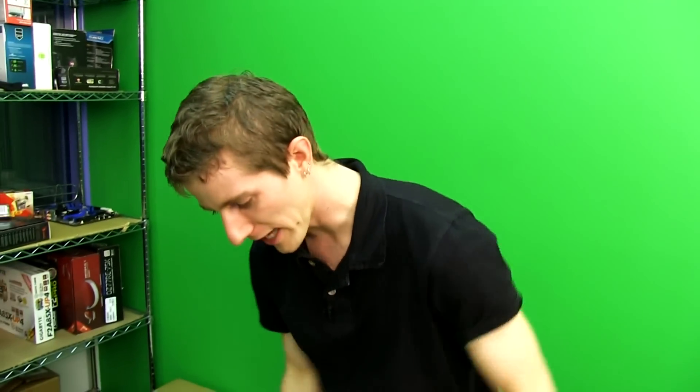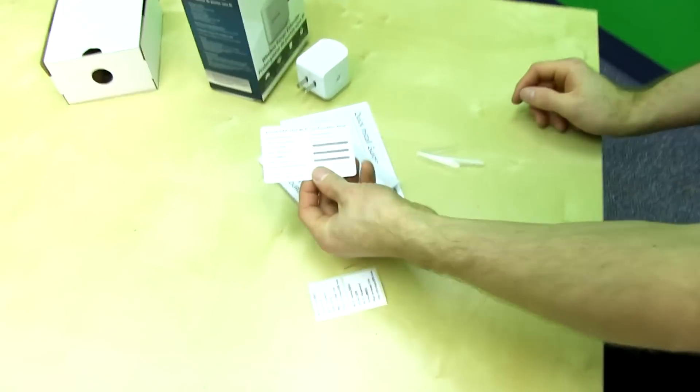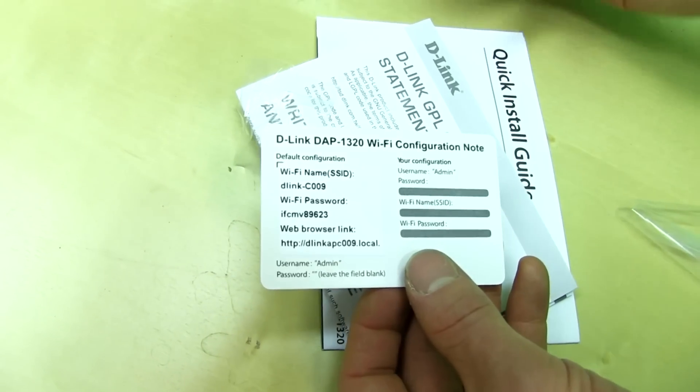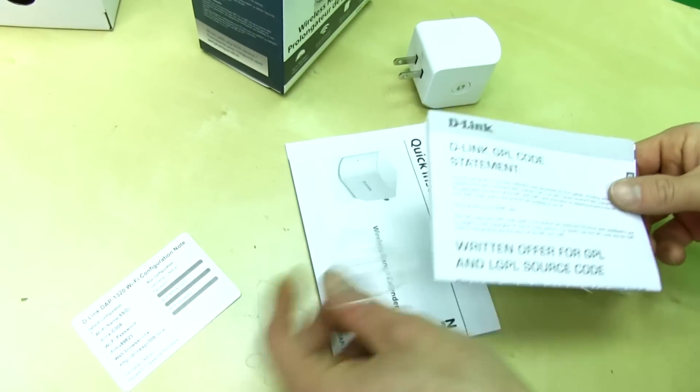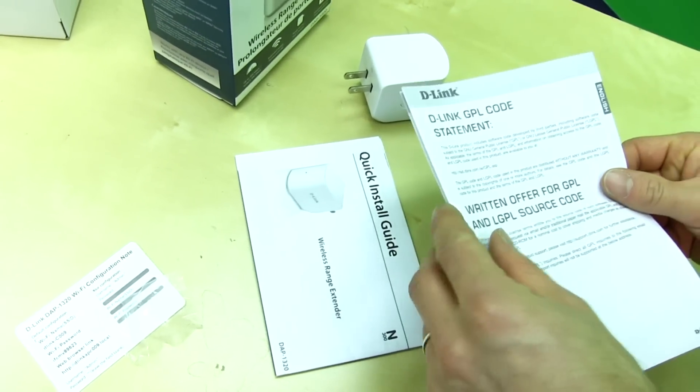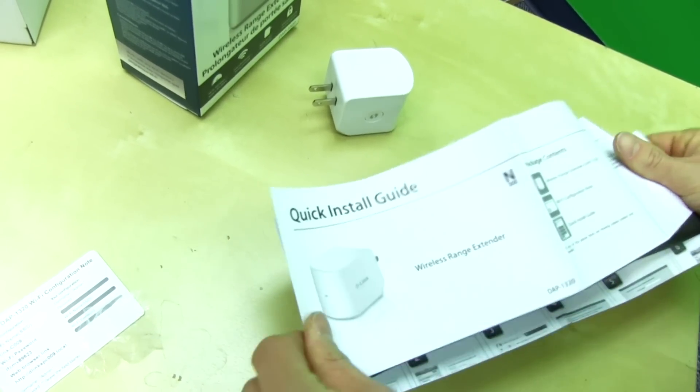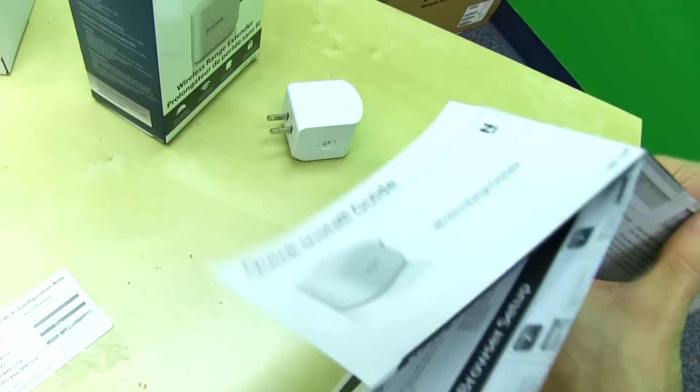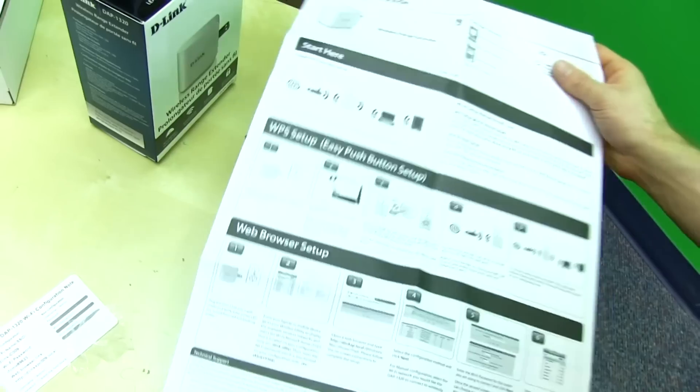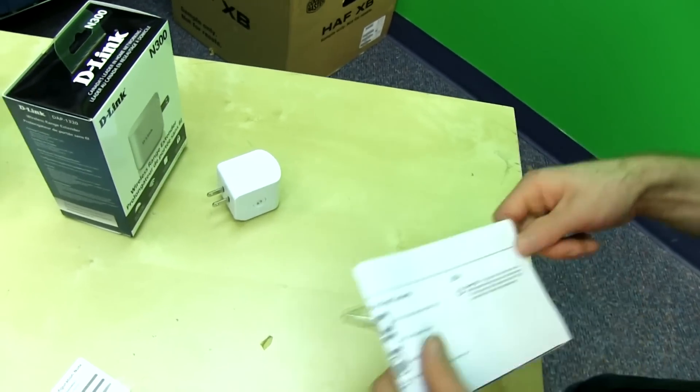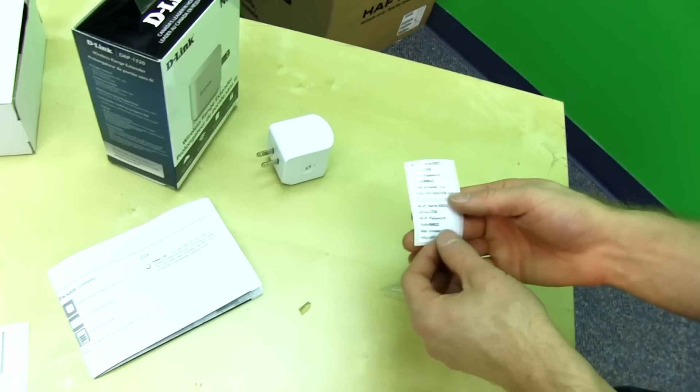And I realized we forgot to look at the included documentation. Documentation's good, check it out. They include one of these little cards that tells you everything you need to know about your little wireless range extender. They give you a written offer for something, source. Seriously? Get out of here. A quick install guide, which is basically covered already on the outside of the box, but apparently they feel the need to give you a much more complicated quick start guide, which would probably include instructions for not using WPS.